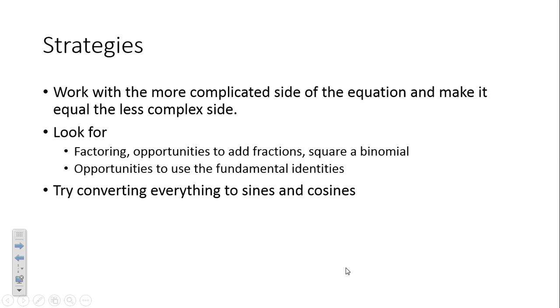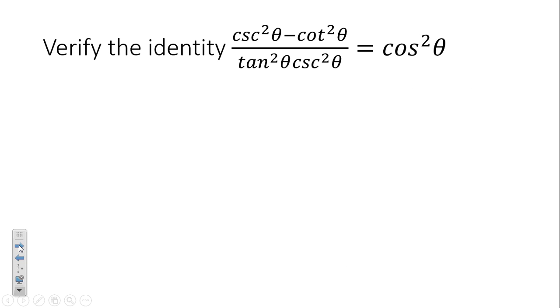These are all strategies that are in the book, and I just kind of simplified them. So, verifying an identity - rather than just simplifying, we're actually making the left side of the equation look like the right. The left side is more complicated, right? So we're not going to change the right side whatsoever. We're only going to change the left side. So that looks like a mess: cosecant squared of theta minus cotangent squared of theta over tangent squared of theta times cosecant squared of theta.